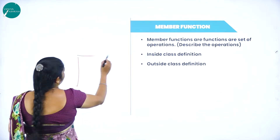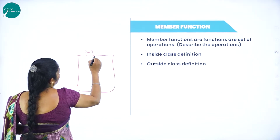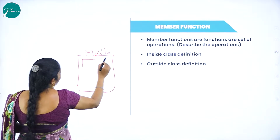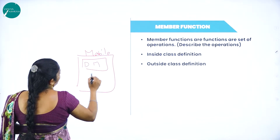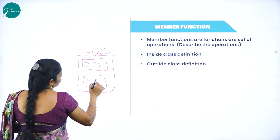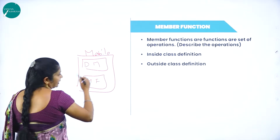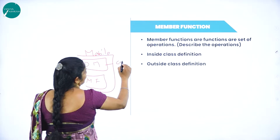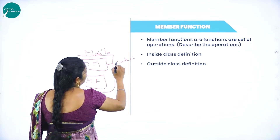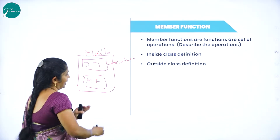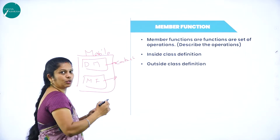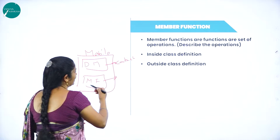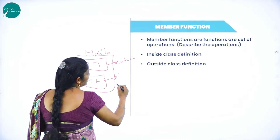For example, if I am going to consider a mobile, on that mobile we have data members as well as member functions. Data members are a set of data — for example, contact numbers. Contact numbers can be called as data. And member functions are nothing but incoming call, outgoing call, WhatsApp, Bluetooth — everything I can call it as a function.